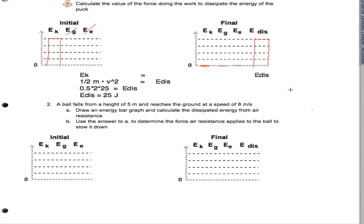A ball falls from a height of 5 meters and reaches the ground at a speed of 8 meters per second. And it says, draw an energy bar graph and calculate the dissipated energy from air resistance. So, apparently, what we're saying is that if there were no air resistance, it would reach the ground faster than 8 meters per second.